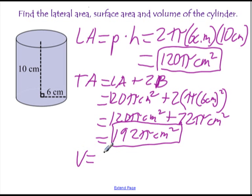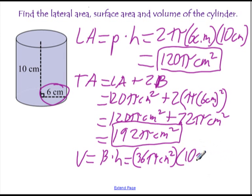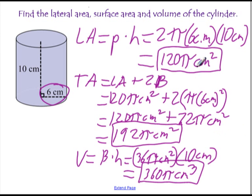And then finally, the volume. Volume, remember, area of the base times the height. Area of the base is pi r squared. So that's 36 pi centimeters squared is the area of the base. 6 squared is 36. And the height is 10 centimeters. And so we multiply those together, and we get 360 pi centimeters cubed. So 360 pi cubic centimeters. And again, we're leaving everything in terms of pi. That's how you should write your answer. And that's about it for cylinders. Thanks for watching.